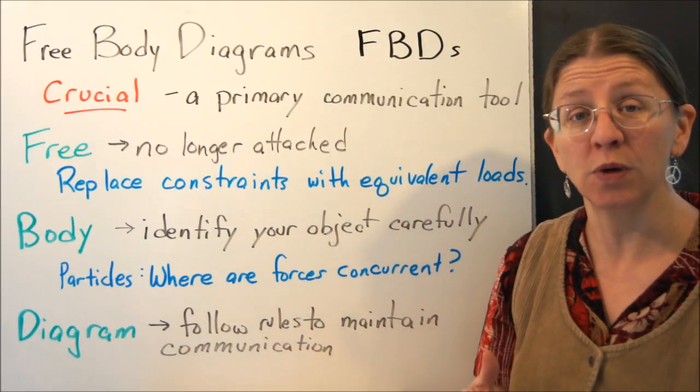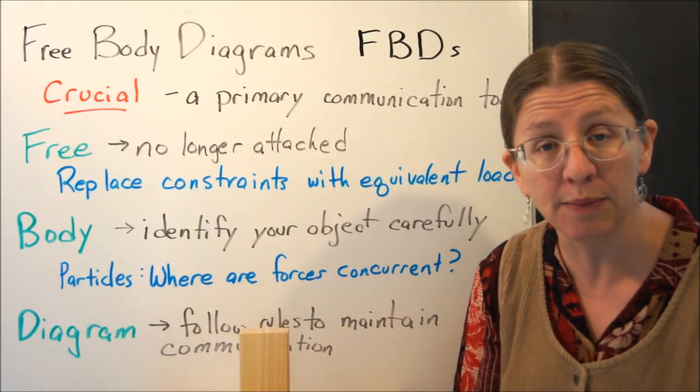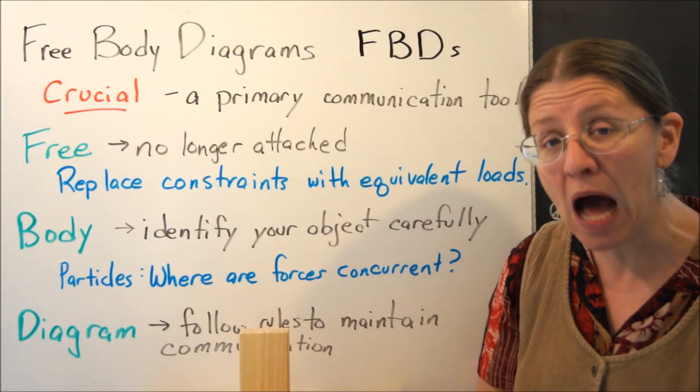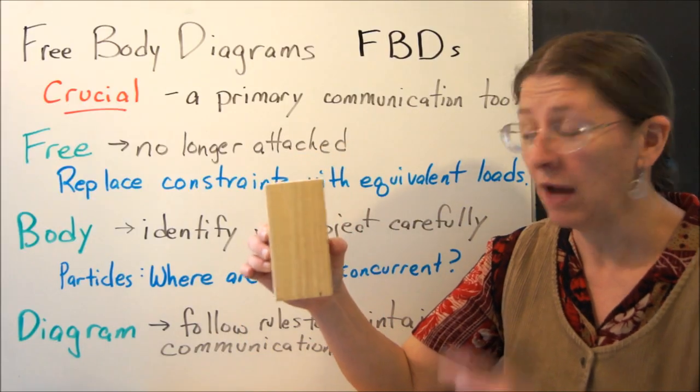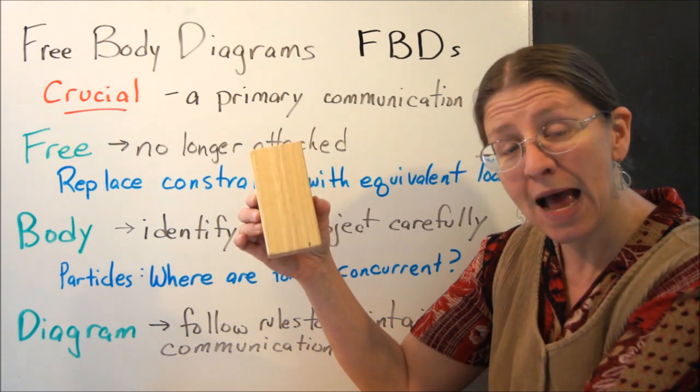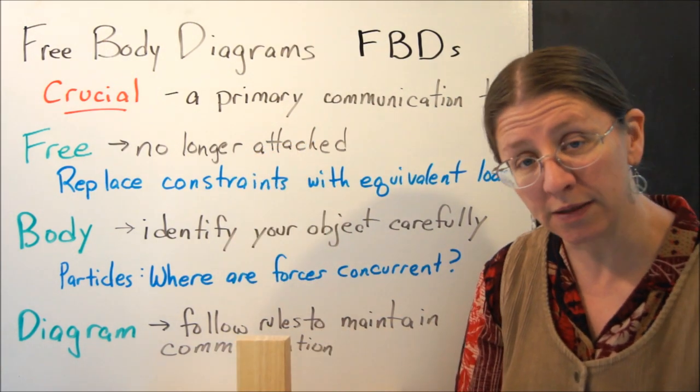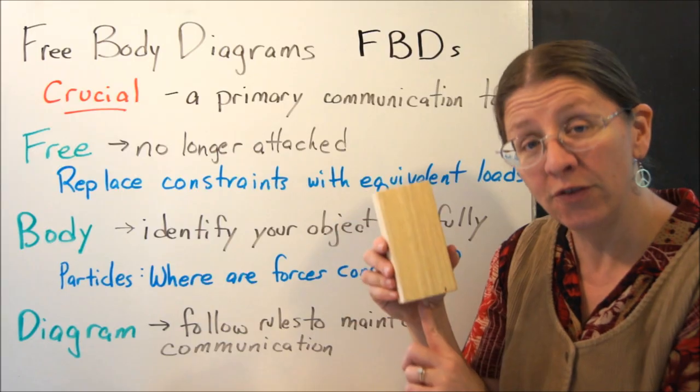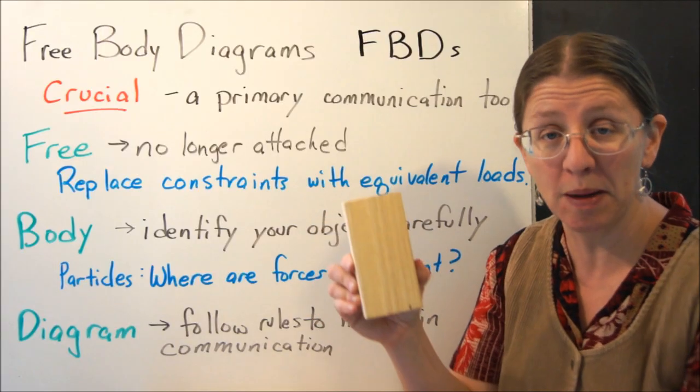Over the course of the semester, we're going to do this over and over again. The easiest way to start is to think about a block sitting on a table. If I want to consider the free body diagram of the block, I will consider just the block. I free the body. I've identified the body. I'm going to free it from the rest of it, but I have to replace how it was constrained before with forces. So before, it was sitting there. I had the weight acting down and I have a normal force acting up. So my free body diagram will have the weight and the normal force on my block.